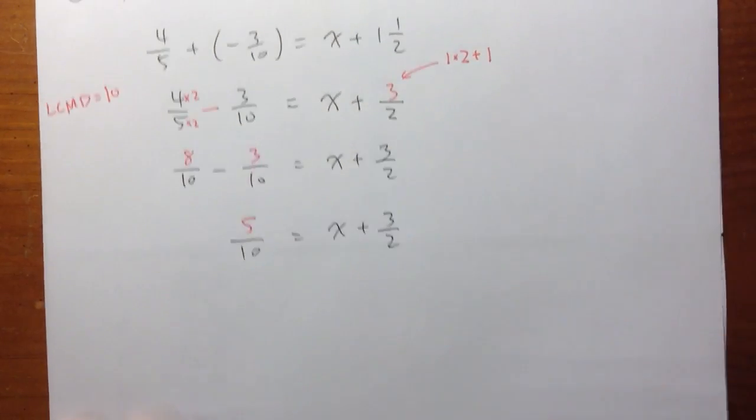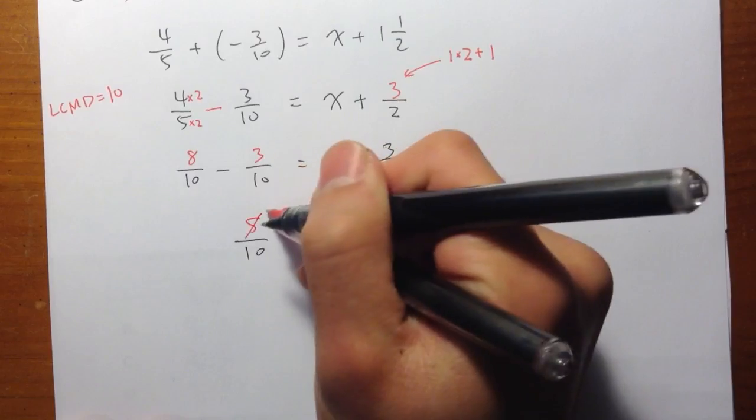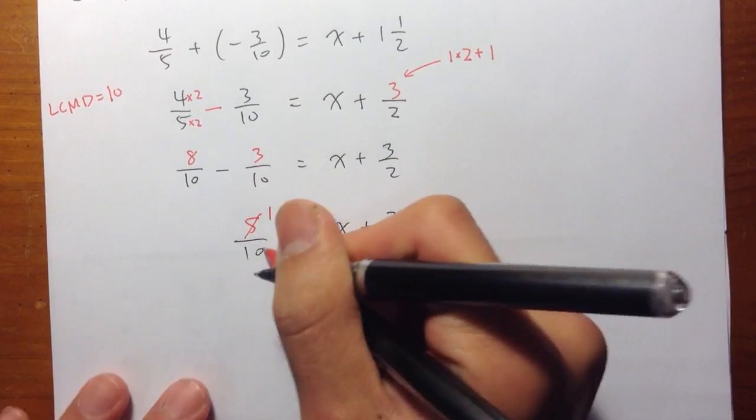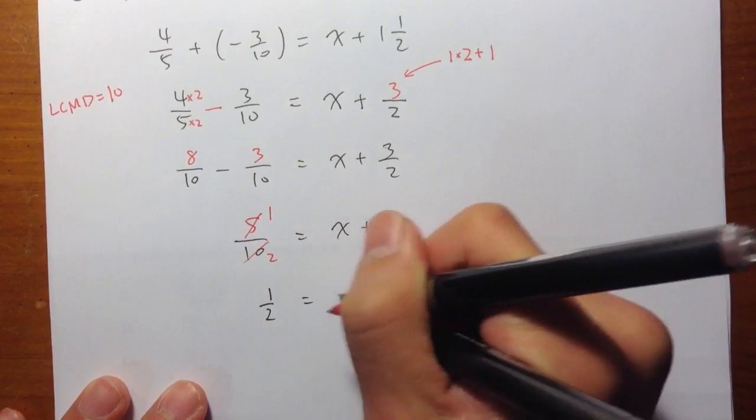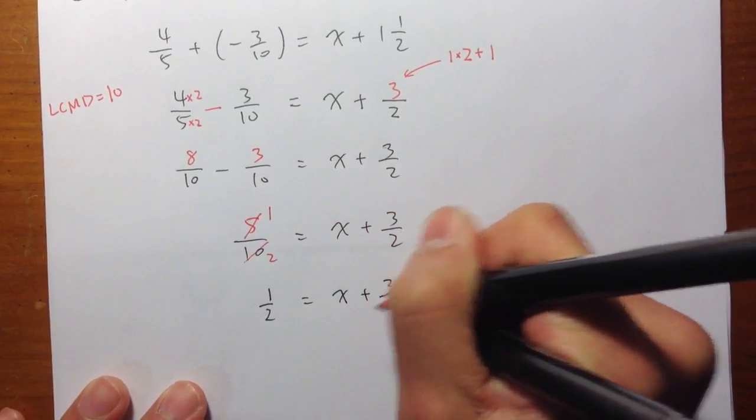And what's 5 over 10? I can reduce that, right? 5 goes into 5 once. 5 goes into 10 twice. So technically, I have just 1 half. It's equal to x plus 3 over 2.